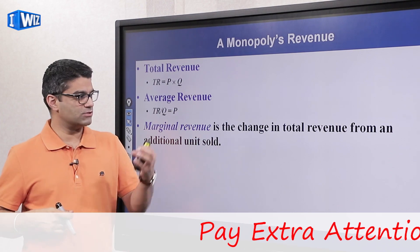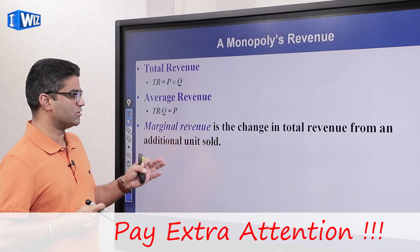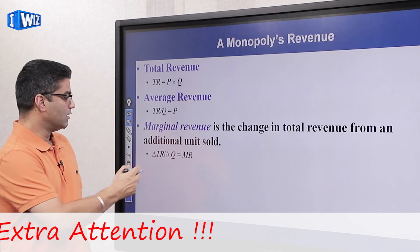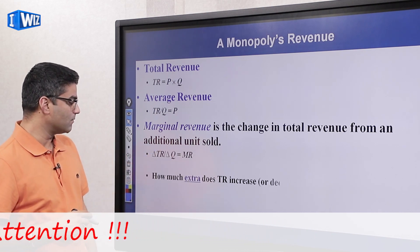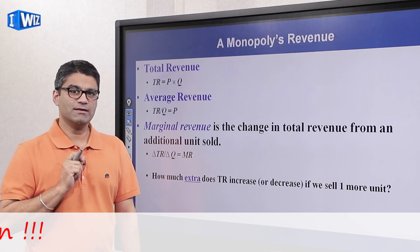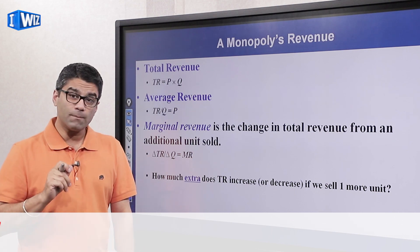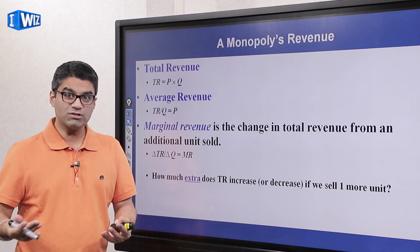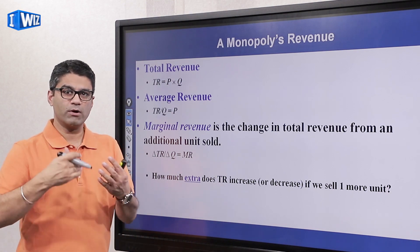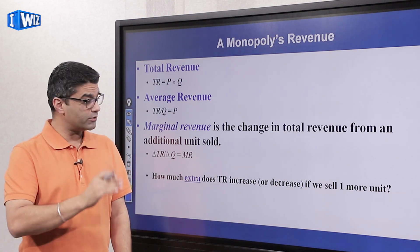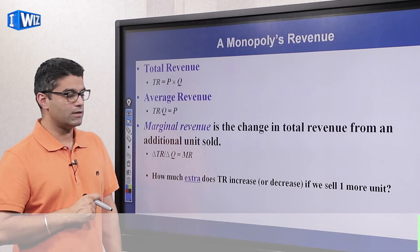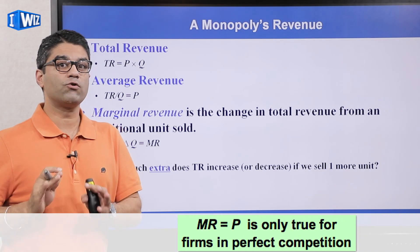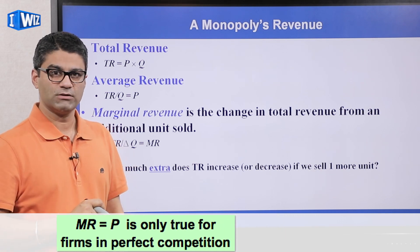The definition of marginal revenue is the same: it's the change in total revenue divided by the change in quantity, or the change in P×Q divided by change in quantity. The difference is that under perfect competition the price remains constant, so the only thing that changes is quantity, which let us simplify marginal revenue to equal price. That is not going to be true anymore for a monopolist.